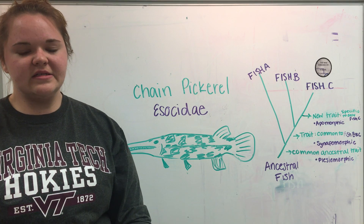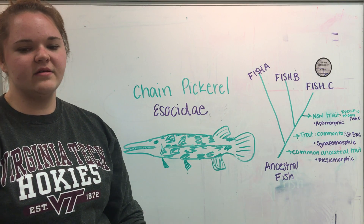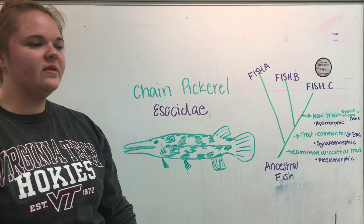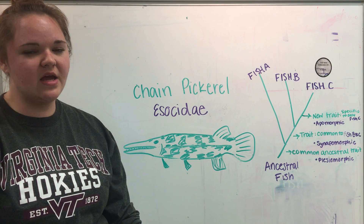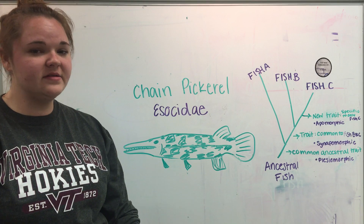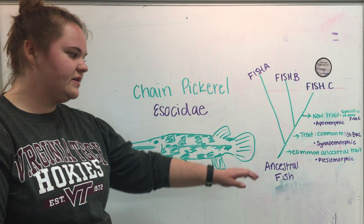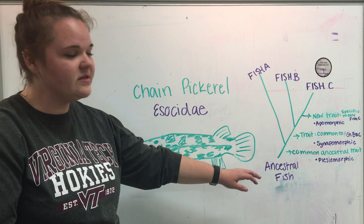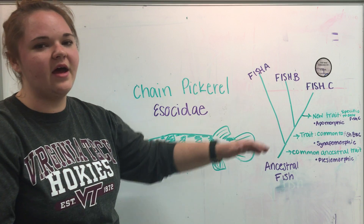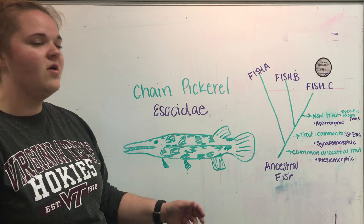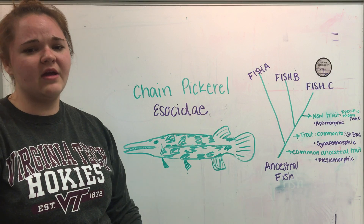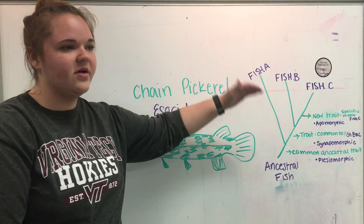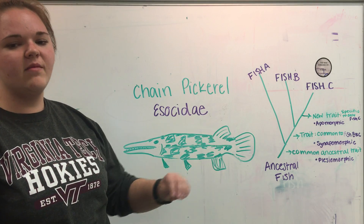Next is a bit of a setback for cladograms: it only looks at one character state. For instance, we'll use fins. An ancestral fish will only have one dorsal fin usually with no spines, but as we move up the cladogram, the dorsal fins will become two — it will move posteriorly or anteriorly, or it could get spines. So as we move up the cladogram, it will become a more derived trait.